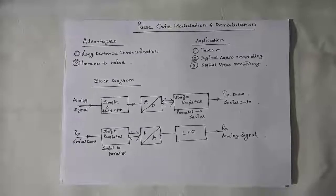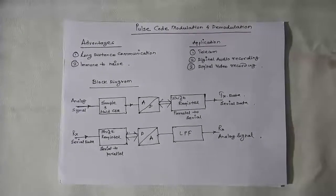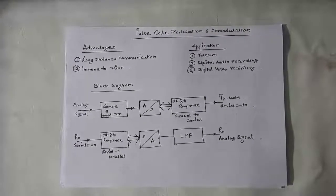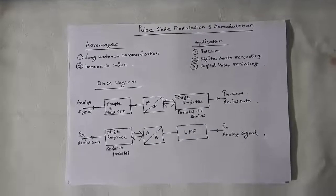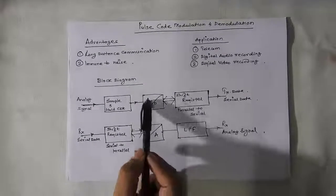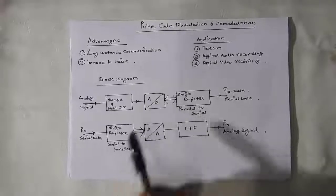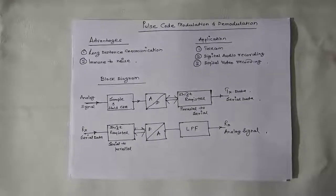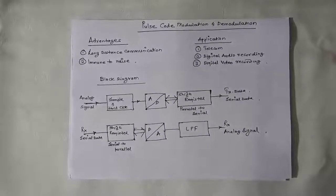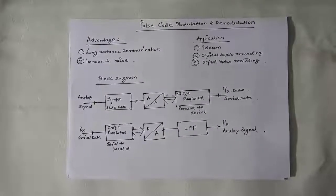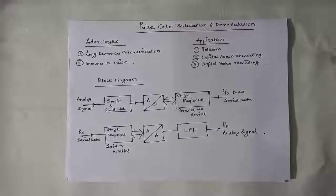Each individual sample held by the sample and hold circuitry is converted by the A to D converter - analog to digital converter. It may be 8 bit, 10 bit, or 14 bit. The more bits the A to D converter has, the better the resolution.